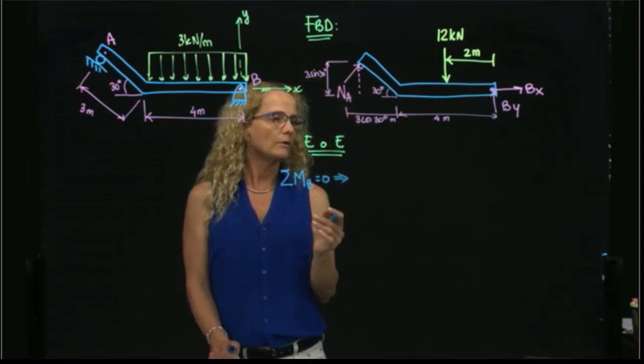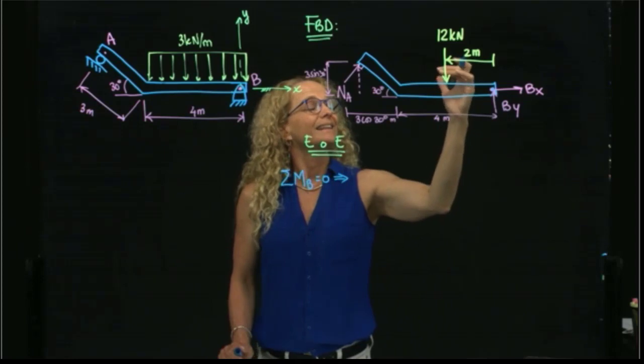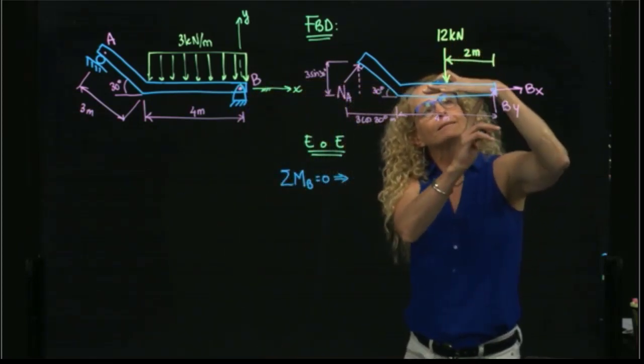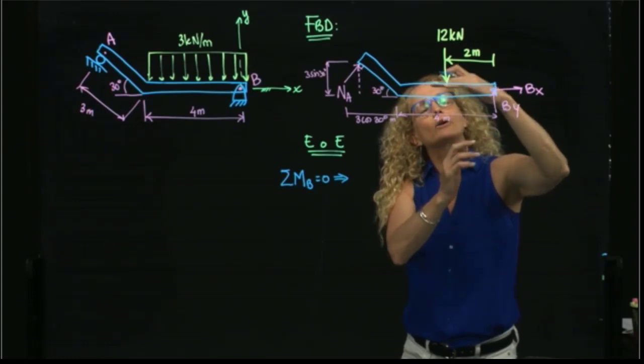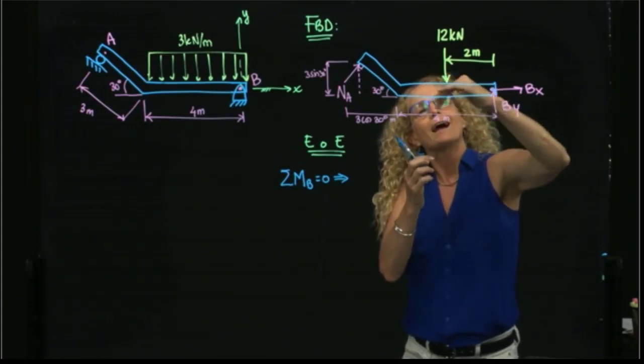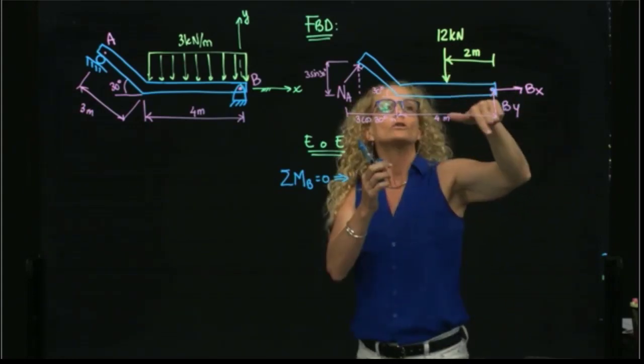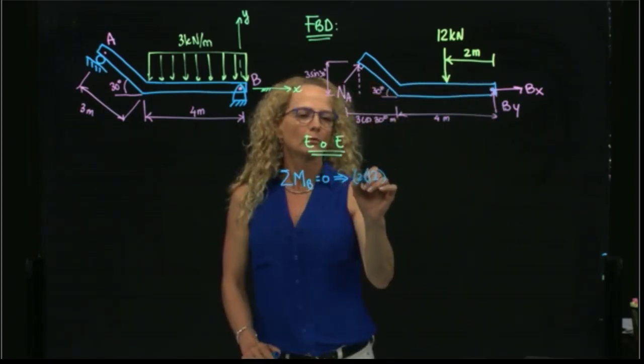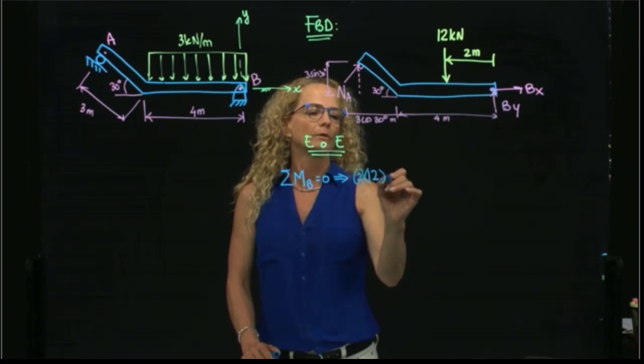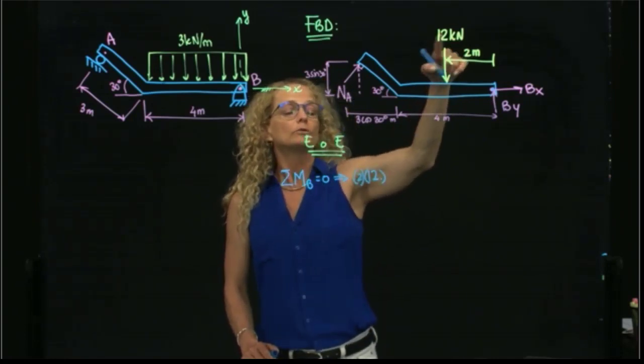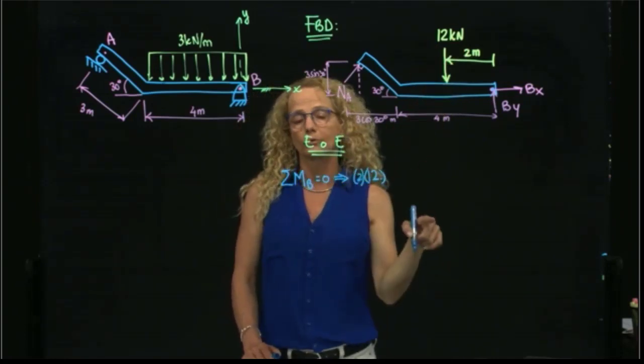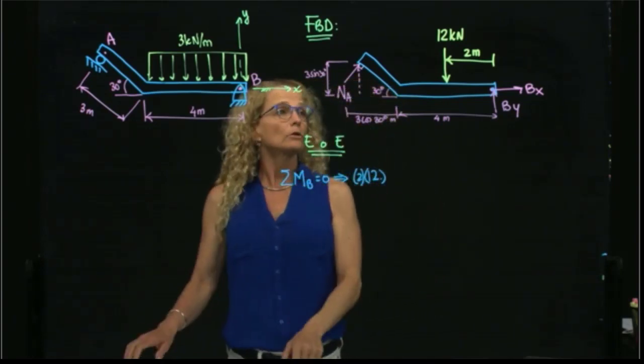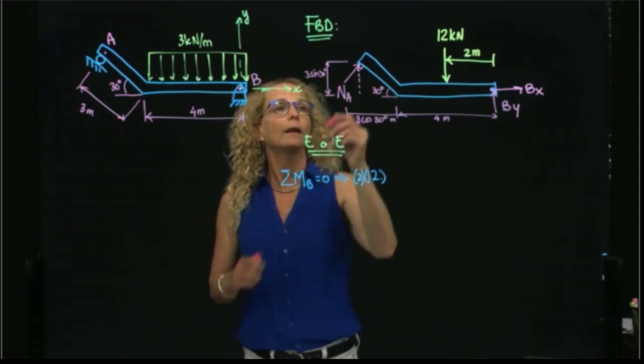What forces do I have? I have 2 meters times 12. I put my hand at B, my distance is the palm, and I curl my fingers towards the force, and I get that this is counterclockwise, so it's positive. 2 times 12, positive. And 12 is kilonewtons. Therefore, if I put 12, the result will be in kilonewtons.